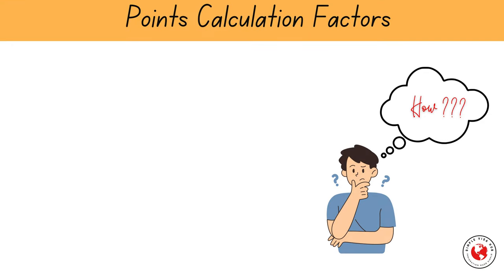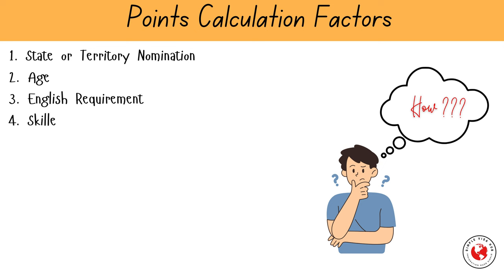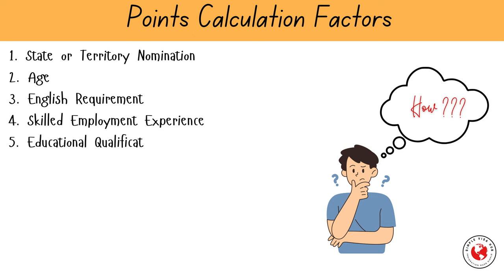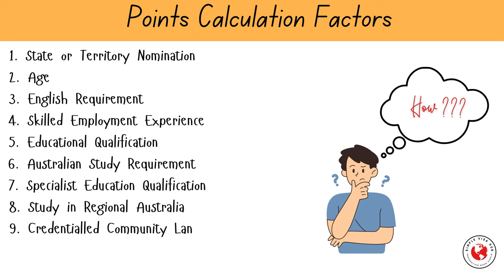So how do you accumulate these points? There are 11 factors through which you can gather points: 1. State Nomination, 2. Age, 3. English Requirement, 4. Skilled Employment Experience, 5. Educational Qualification, 6. Australian Study Requirement, 7. Specialist Education Qualification, 8. Study in Regional Australia, 9. Accredited Community Language, 10. Partner Skills, 11. Professional Year in Australia.